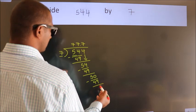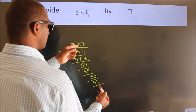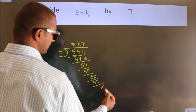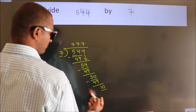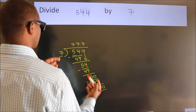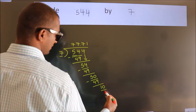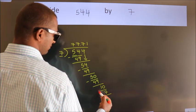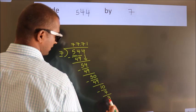After this, we already have the decimal, so directly take 0. So 10. A number close to 10 in the 7 table is 7 once, 7. Now we subtract, we get 3.